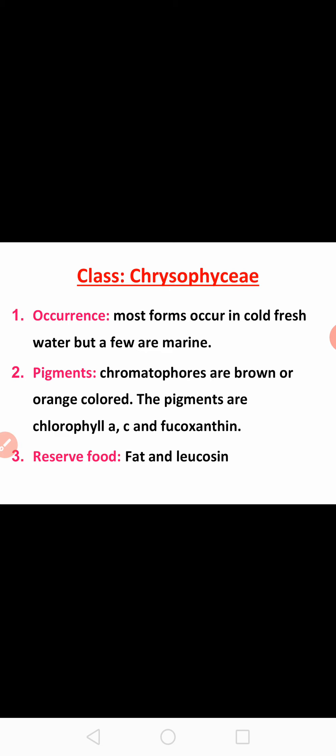Moving on to the third class, Chrysophyceae. Most members are found in cold freshwater, and very few species are found in marine habitats. The main pigments are chlorophyll a and chlorophyll c, along with fucoxanthin. Food is stored in the form of fat and leucosin.